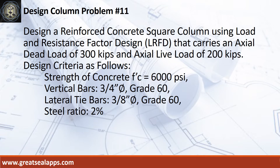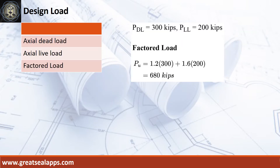Lateral tie bars, 3/8 inch diameter, grade 60. Steel ratio, 2%. The column carries an actual dead load of 300 kips and actual live load of 200 kips, for a factored load of 680 kips.